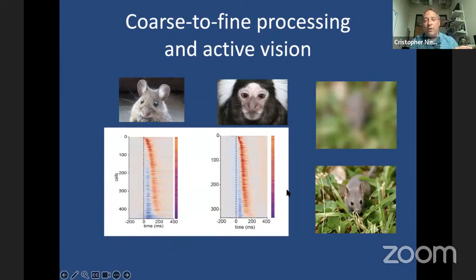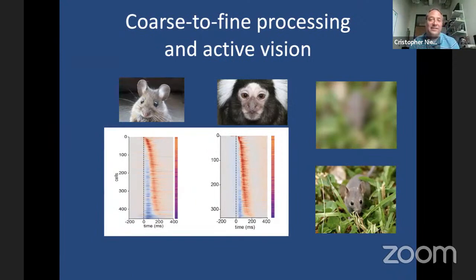We teamed up with Jake Yates and Jude Mitchell, who were doing similar experiments in the head-fixed marmoset free to gaze within a natural scene. Once they sorted their data the same way, they saw this same temporal sequence and the same progression from low to higher spatial frequencies — showing that mouse and marmoset share this coarse-to-fine processing, even though they have very different behavioral repertoires, visual scenes, and eye movements.